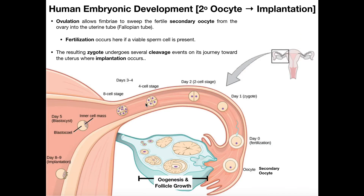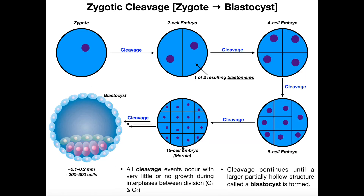When you end up in this 16-cell stage, this cluster of cells gets a special name — it's called a morula. The morula exists somewhere between about days four and five. Now the morula is going to undergo more cleavage events, but after the morula stage you no longer have synchronous cleavages — some cells might undergo cleavage at different times than others. So you will not get exactly a 32-cell stage and a 64-cell stage. Up to this point they were pretty much synchronous; now they're going to be asynchronous.